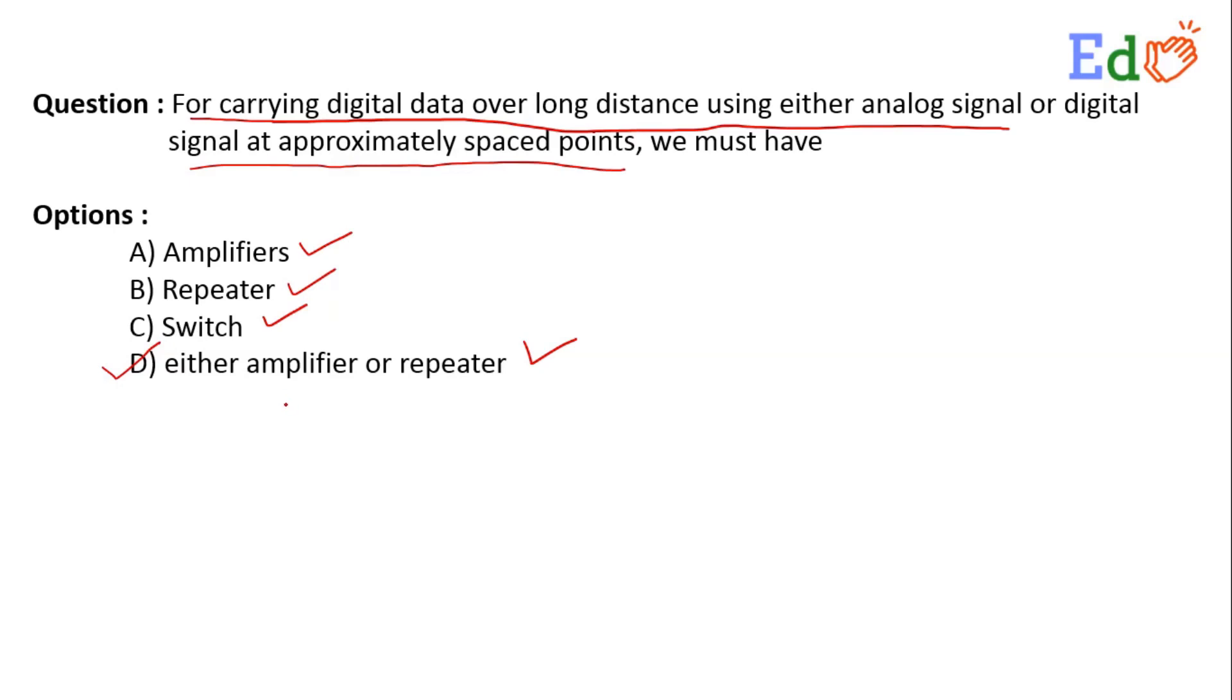We know that whenever the signal is transmitted, due to ohmic drop from the resistance in the media, the signal strength will decrease. It might be found that the signal strength has become so feeble that at the receiving end, the receiver may not understand what data it has received.